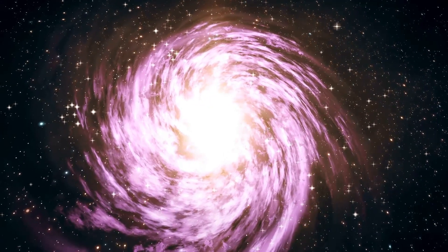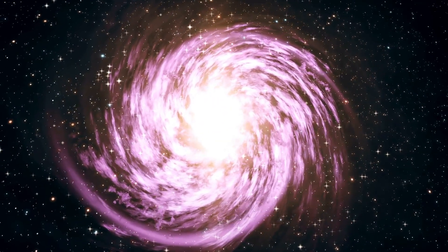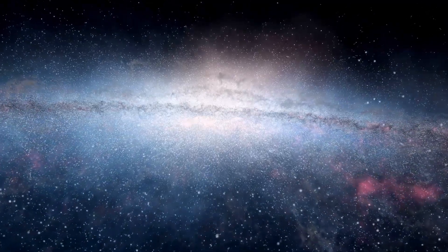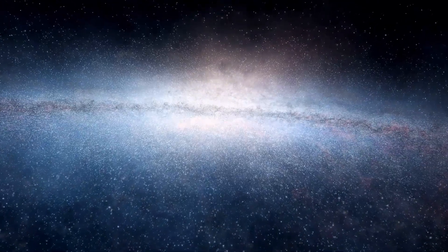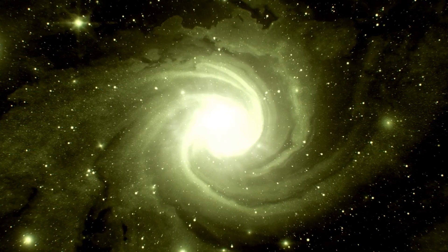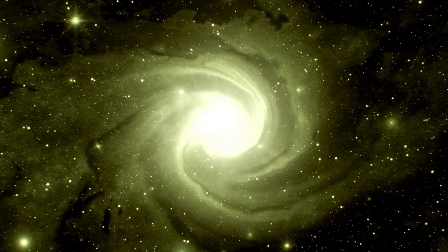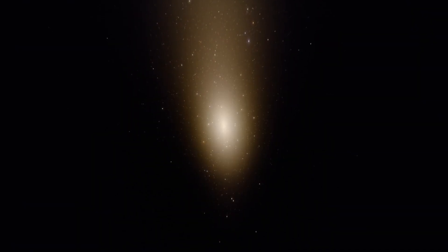General relativity introduces the idea of black holes, which are regions where gravity is super intense. Inside a black hole, the gravitational force is so powerful that nothing, not even light, can escape from it. The edge surrounding a black hole is called the event horizon, and it's like a point of no return. Once something crosses this boundary, it gets pulled into the black hole without any chance of returning.